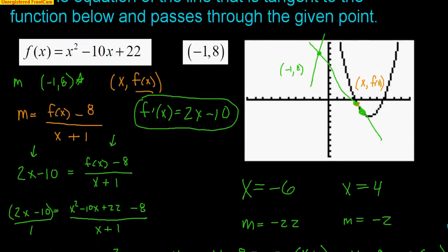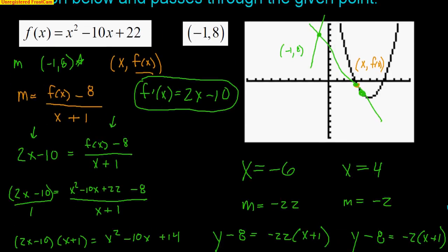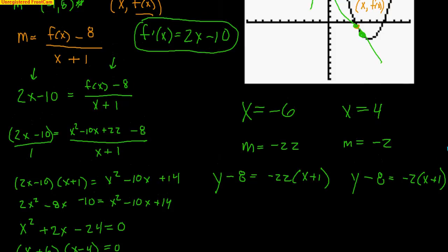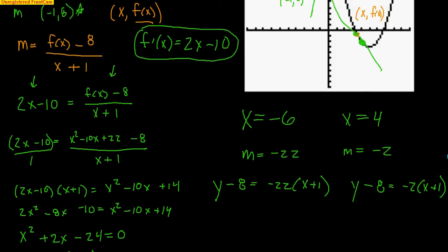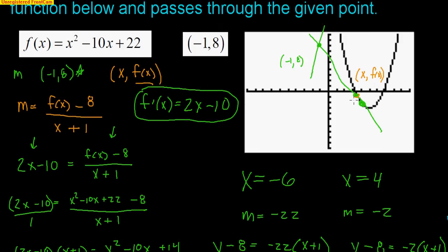To summarize the method: I didn't know the point of tangency, so I called it (x, f(x)). I found the slope between the given point (-1, 8) and that unknown point using the basic slope formula. I set that equal to the derivative, since both are formulas for slope, solved for x, and got two x values: -6 and 4.